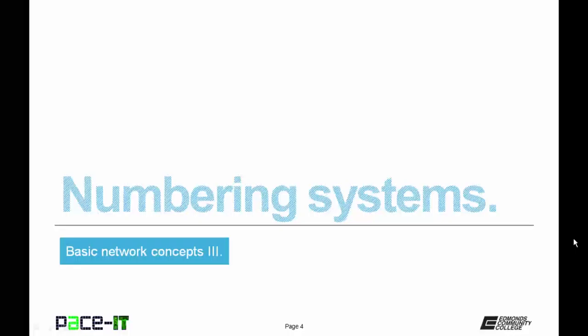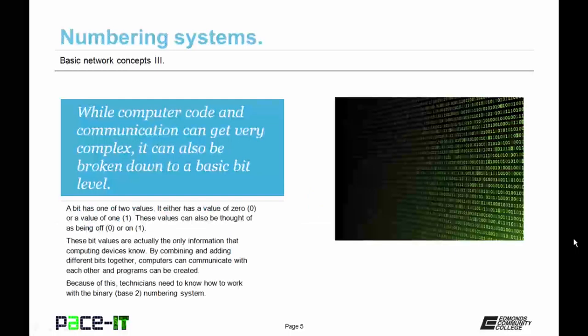Of course, I'm going to begin by talking about numbering systems. While computer code and communication can get very complex, it can also be broken down to a basic bit level. A bit has one of two values. It either has a value of zero, or it has a value of one. These values can be thought of as being either off, which is a zero, or on, a one.